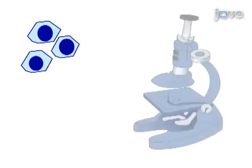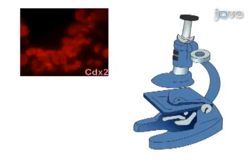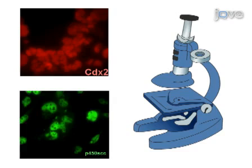Ultimately, results can be obtained that show the expression of a trophoblast stem cell marker, i.e. CDX2, in undifferentiated TS cells, or a differentiated marker, i.e. P450SCC, after their maturation into trophoblast giant cells through immunofluorescent microscopy.